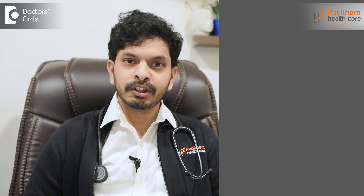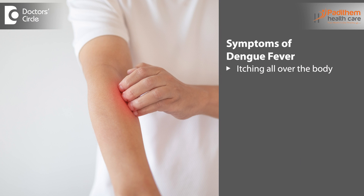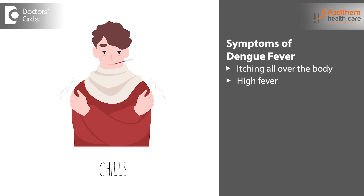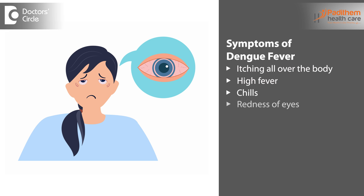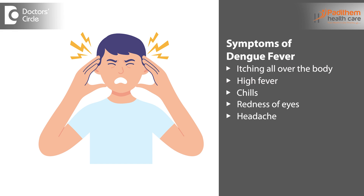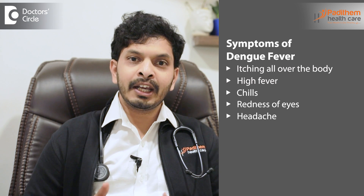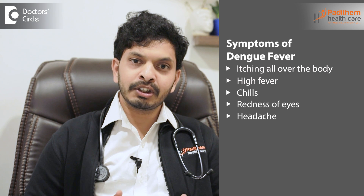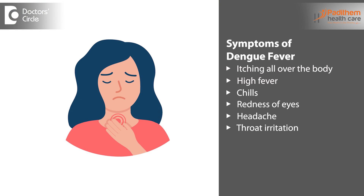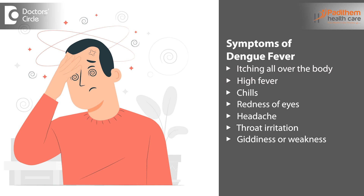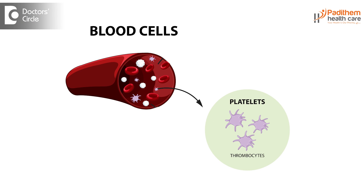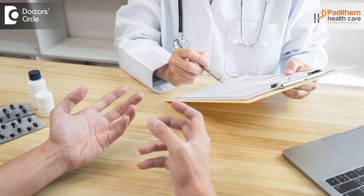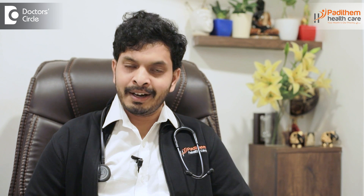Dengue fever is mainly characterized by body ache all over and very high fever that won't come down with normal Paracetamol. It is always associated with chills, redness of the eyes, and headache. Sometimes, due to low immunity, it can be complicated by other infections causing throat irritation, giddiness, weakness, and you may even collapse because of low platelet count. You should immediately seek a doctor's intervention when this situation arises.